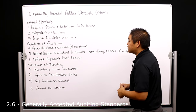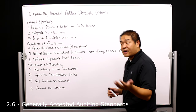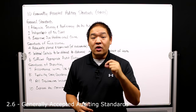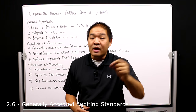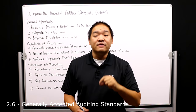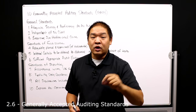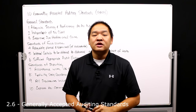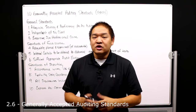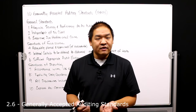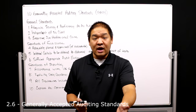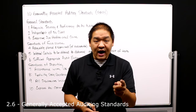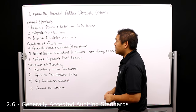Number three: we must exercise due professional care, which we discussed in the previous lesson. We have to go in with a questioning eye. We don't believe everything the client says or gives us — we have to do work to make sure we can trust the information. Just because they're Microsoft or Apple doesn't mean we trust their financial statements. We have a questioning eye because we're exercising due professional care.